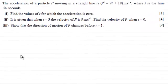Hi, now in this question we're told that the acceleration of a particle P moving in a straight line is t squared minus 9t plus 18 meters per second squared, where t is the time in seconds.